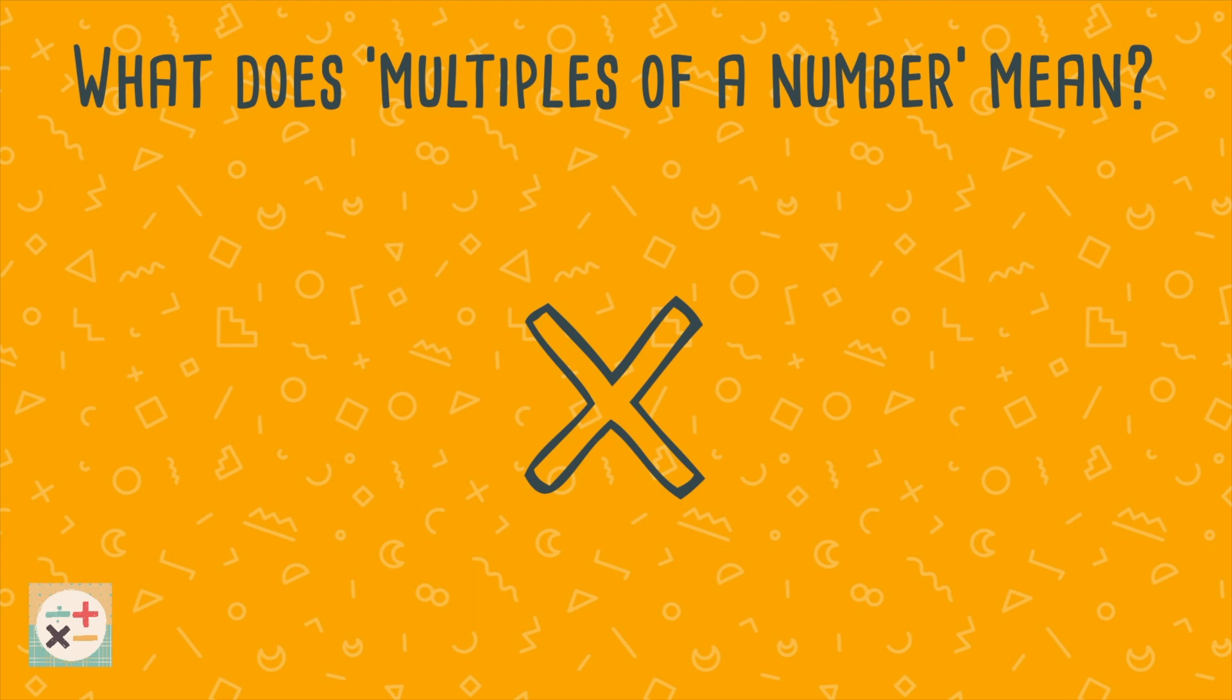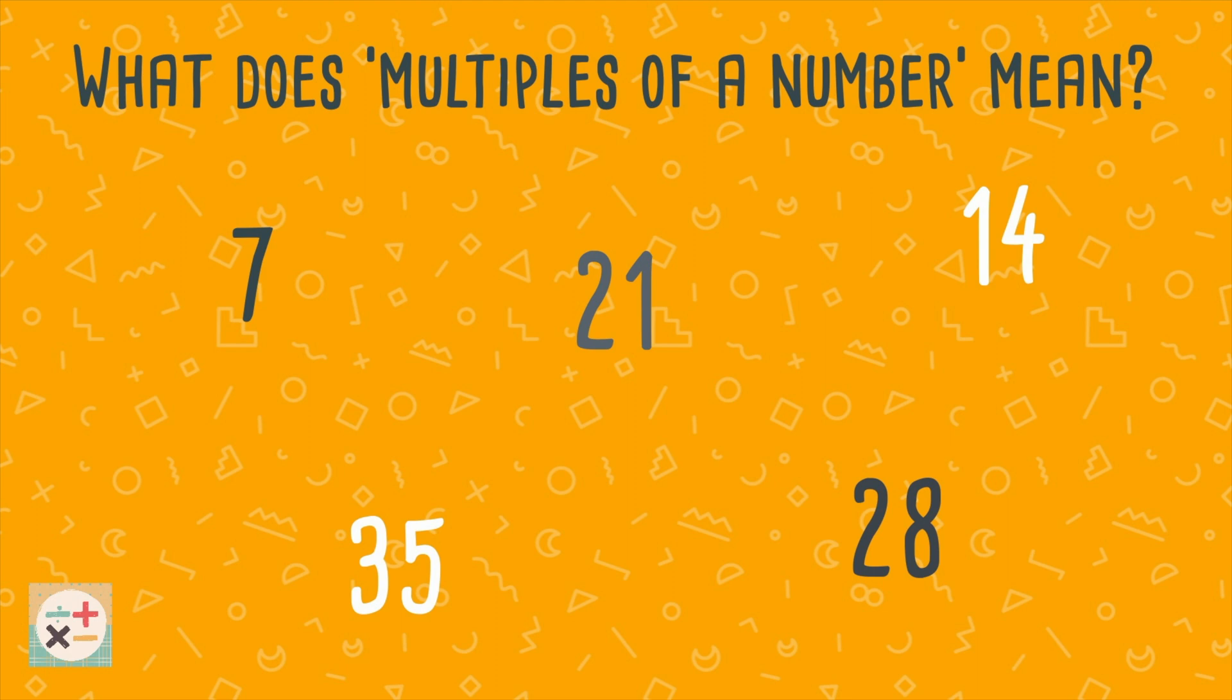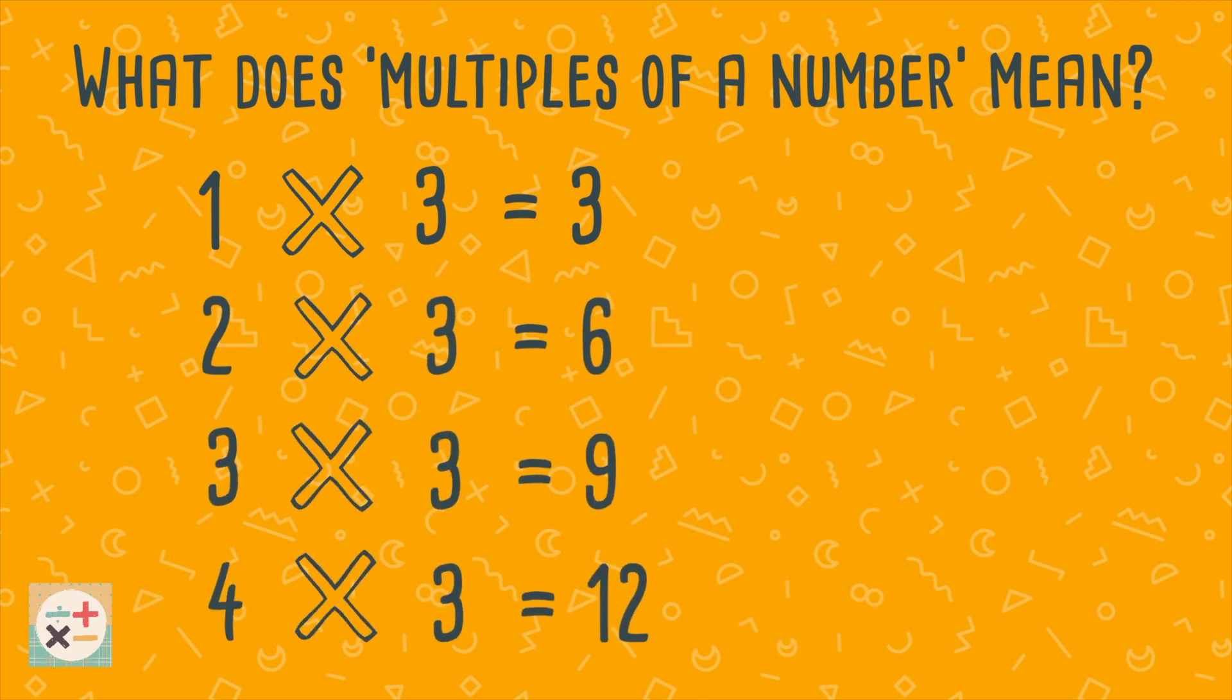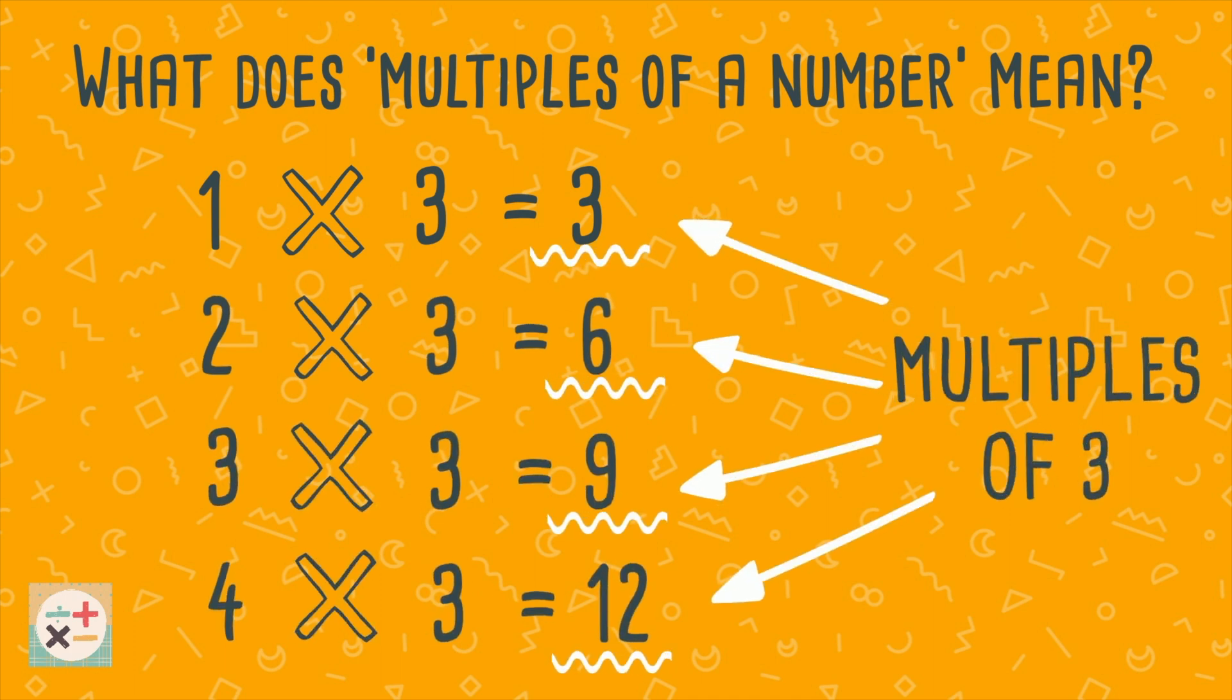For example, some multiples of 7 are 7, 14, 21, 28, etc. To find the first four multiples of 3, we just need to write down the first four numbers of the three times table: 3, 6, 9 and 12.